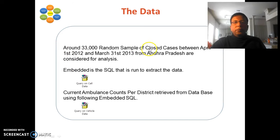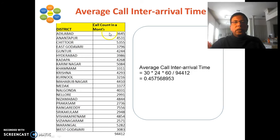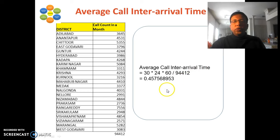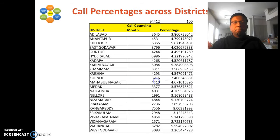About the data: approximately 33,000 randomly sampled closed cases between April 1st, 2012 and March 31st, 2013 — one year of data from Andhra Pradesh — were used for the analysis. SQL queries were run against the database to extract the required data. The 23 districts and their call volumes per month are shown, with a total of 94,412 calls. Dividing by 30 days × 24 hours × 60 minutes gives an average call inter-arrival time of 0.4575 minutes — roughly one call every 0.46 minutes.